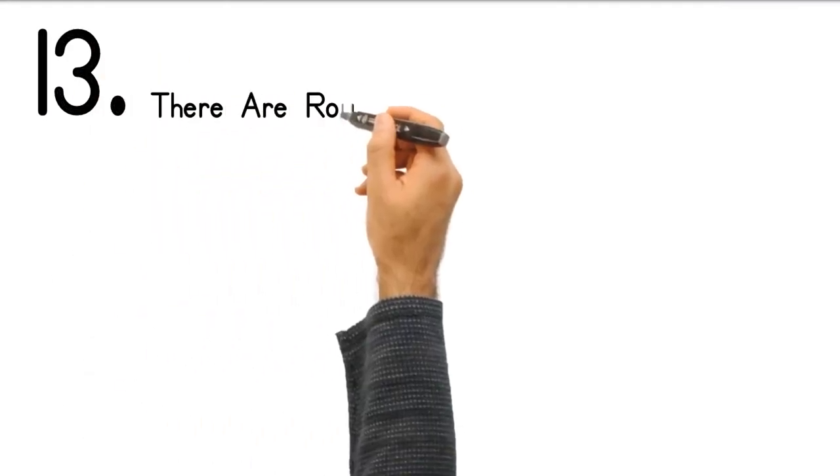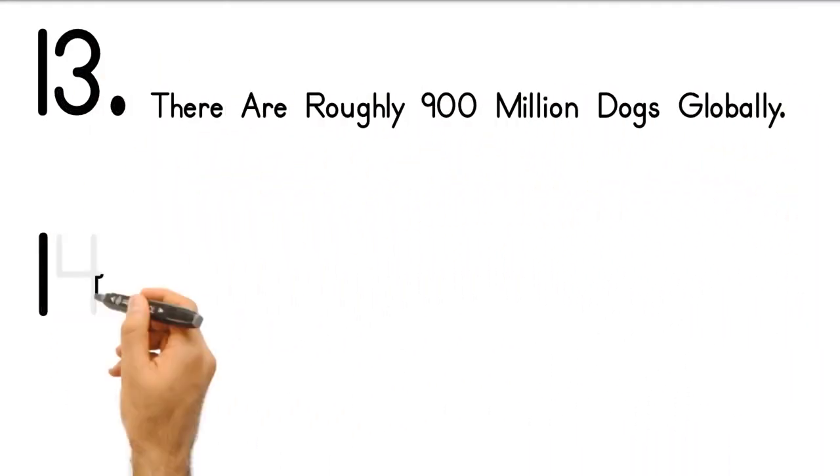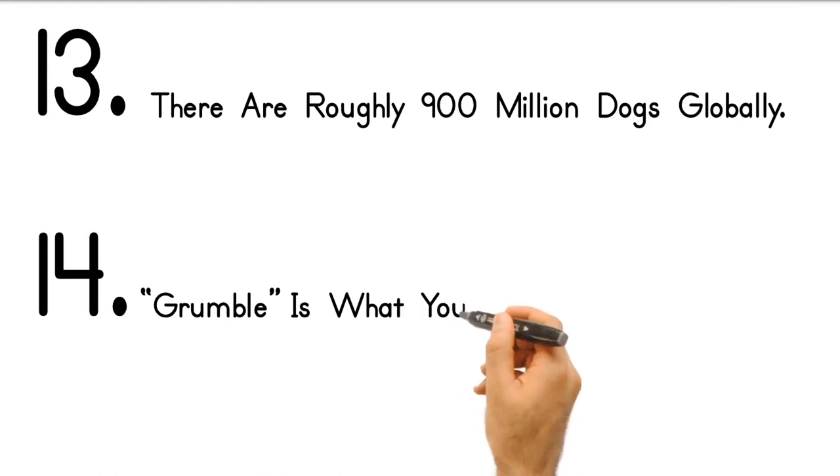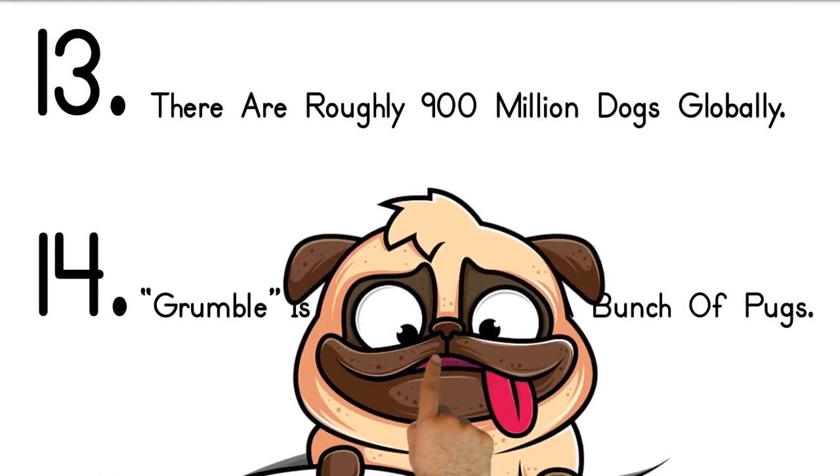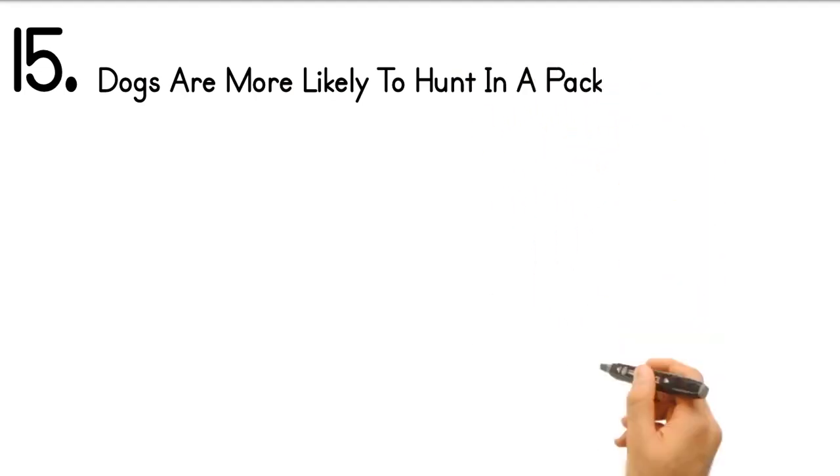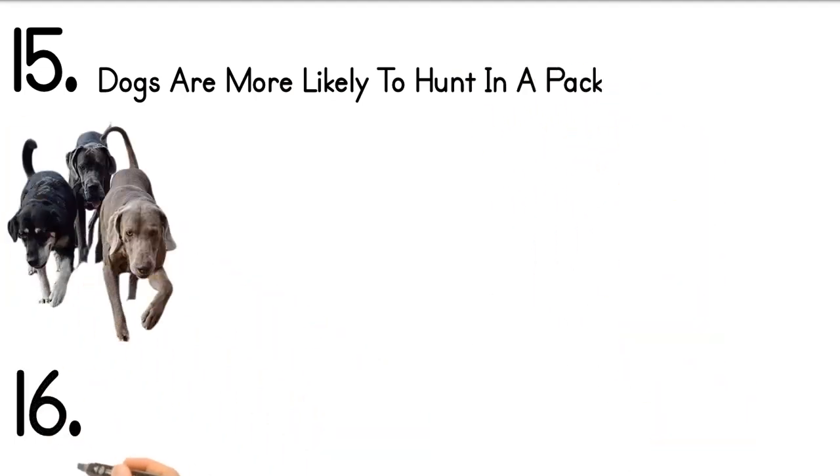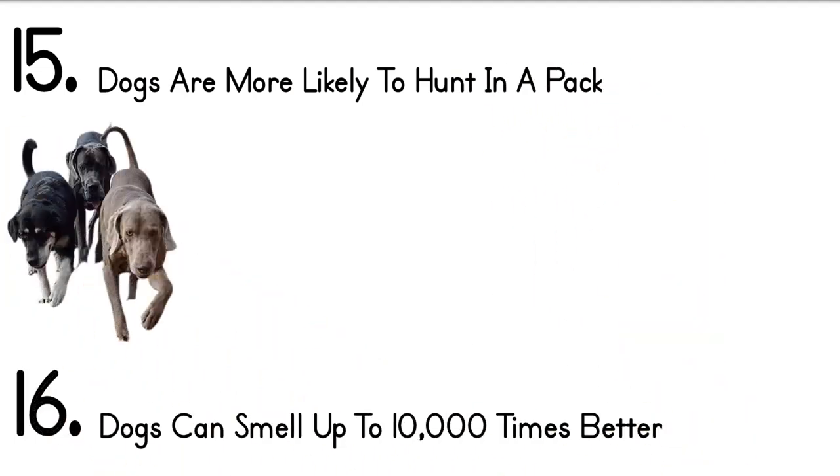13. There are roughly 900 million dogs globally. 14. Grumble is what you call a bunch of pugs. 15. Dogs are more likely to hunt in a pack. 16. Dogs can smell up to 10,000 times better.